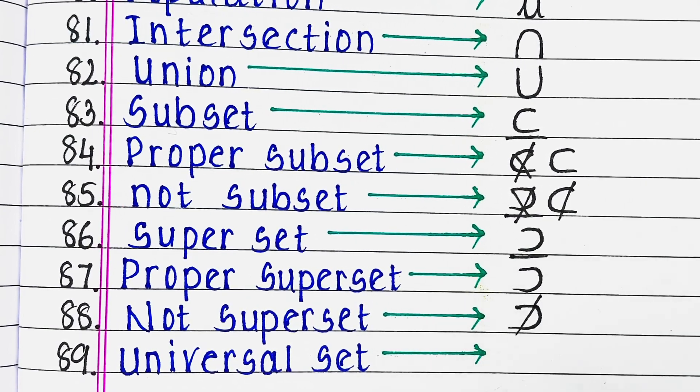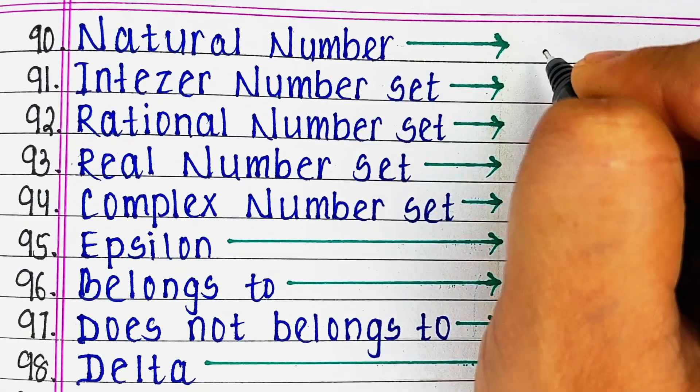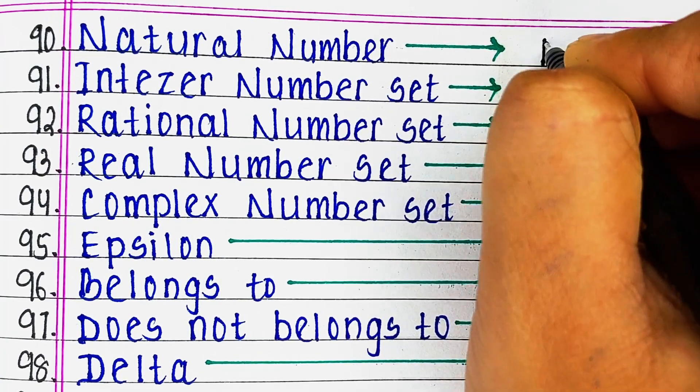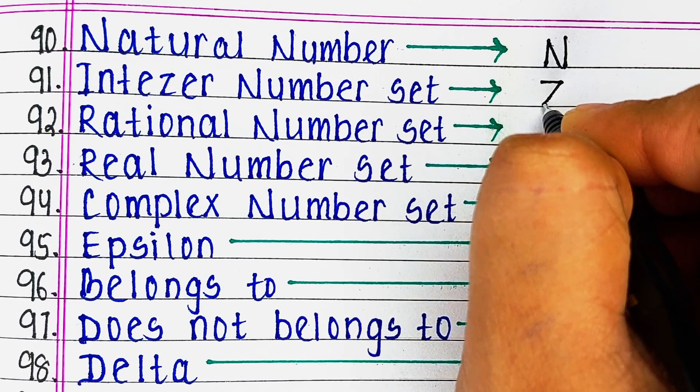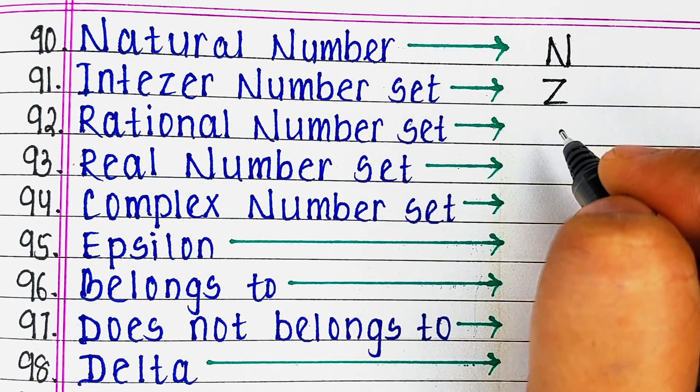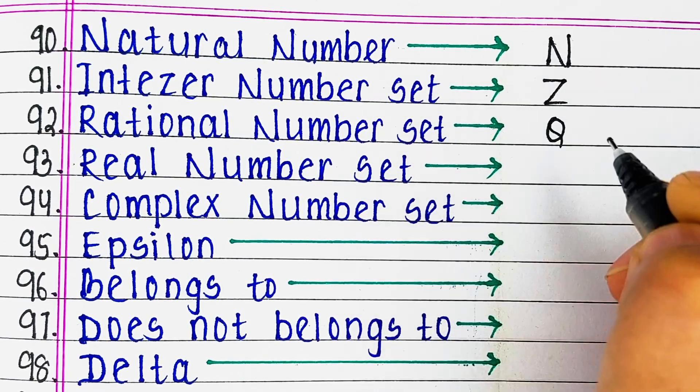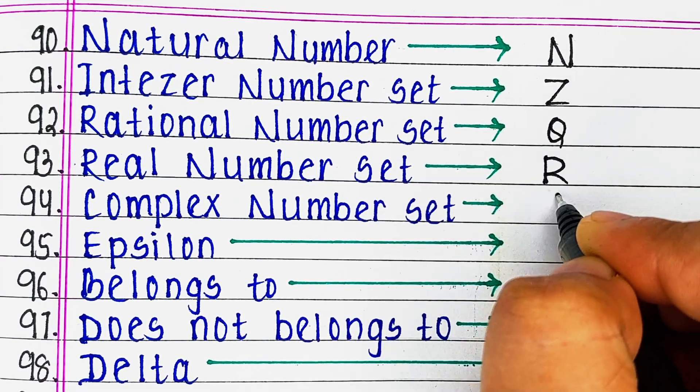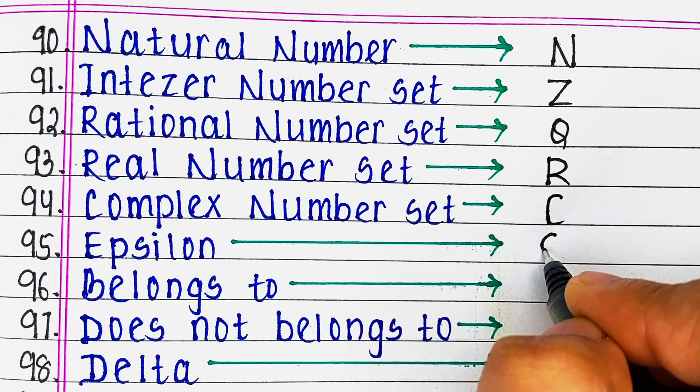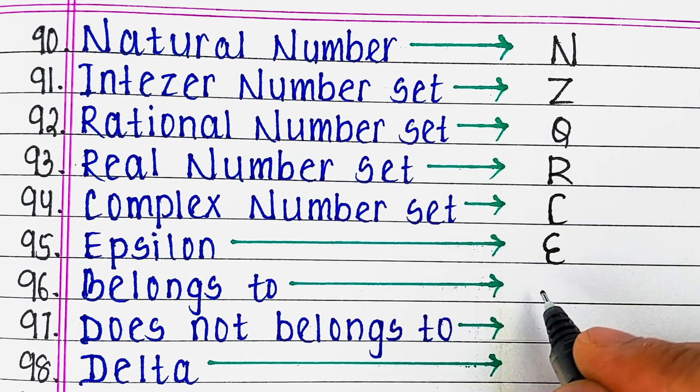Next is natural number, next integer number set, next is rational number set, next real number set, next complex number set, next is epsilon.